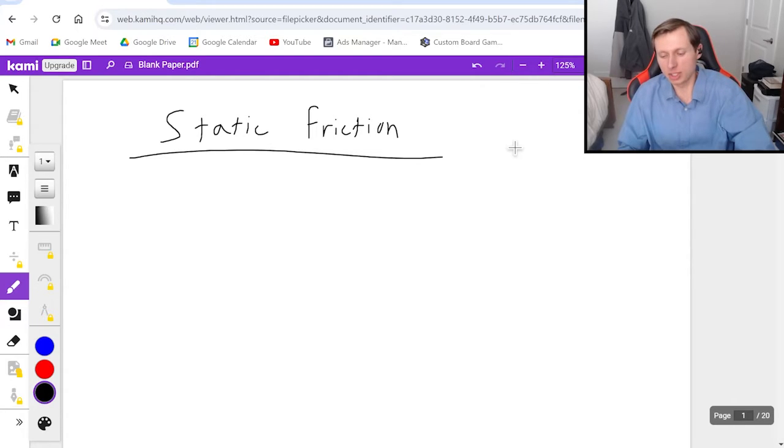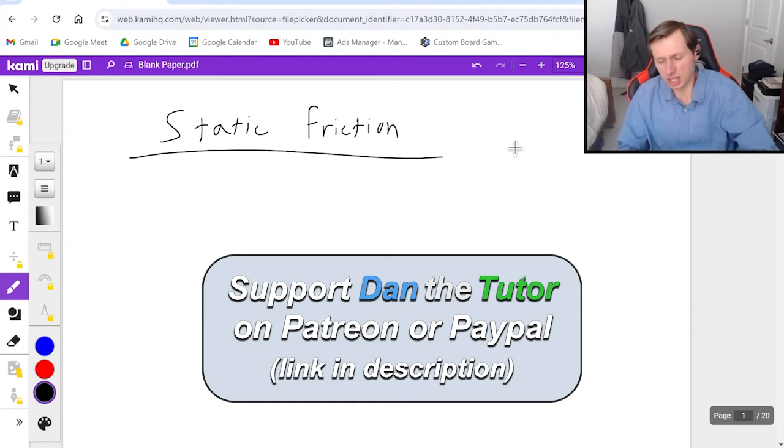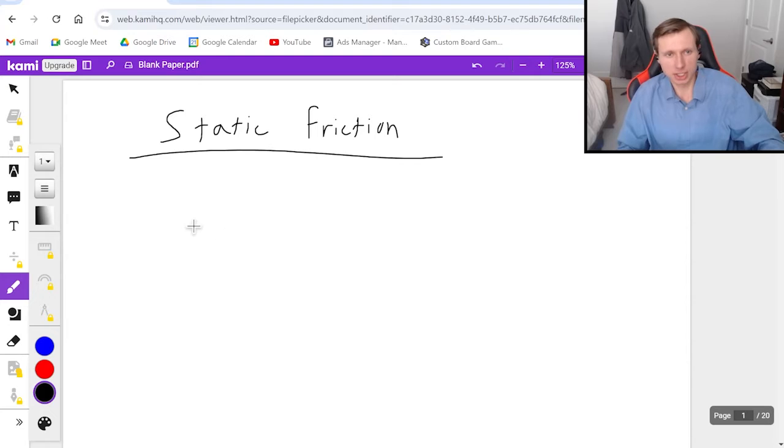Static friction is very similar to kinetic friction, but there's a couple of key differences. First, here's the equation for static friction. There's two equations I'm going to show you. The first one is Fs is less than or equal to μs times Fn, the normal force. Fs is the static friction force, μs is the coefficient of static friction, and Fn is the normal force, the same normal force we talked about in other videos.